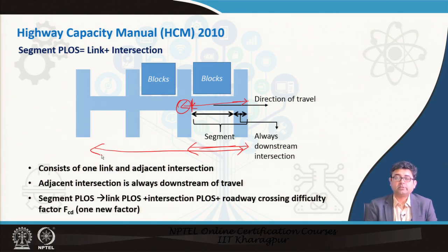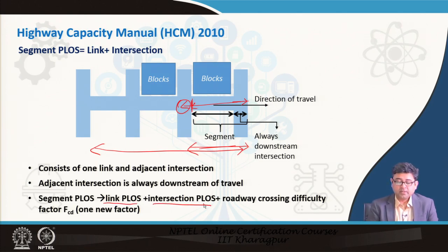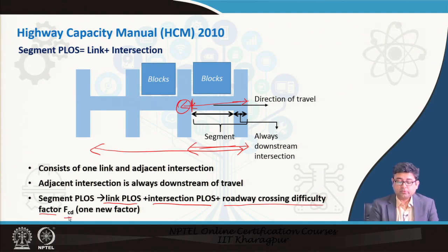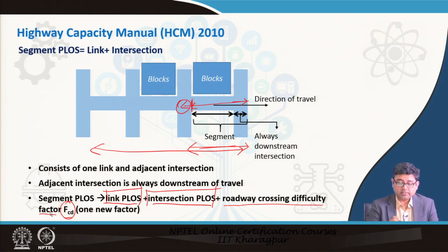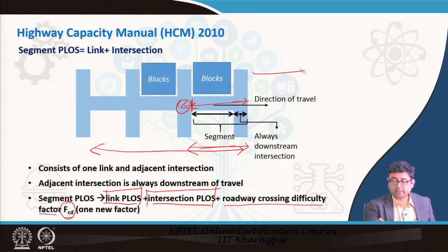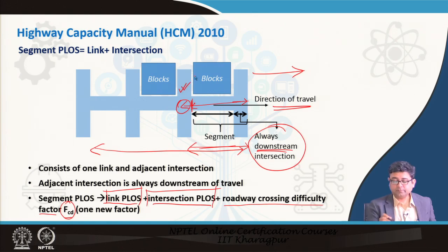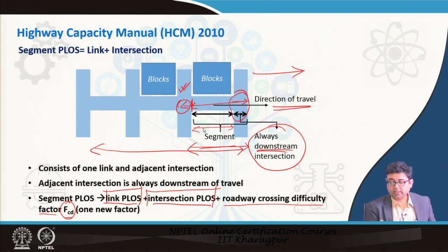To determine the pedestrian level of service score for a segment, it is the link pedestrian level of service score plus the intersection pedestrian level of service score, and in addition we have another factor called the roadway crossing difficulty factor, or FCD. If you already know these two, we have already told you the formulas involved in calculating them. One thing to remember is that the segment is always in the direction of travel, and the intersection considered is always the downstream intersection, not the upstream intersection. Always include the pedestrian level of service score of the downstream intersection and add it to the link in the direction of travel.